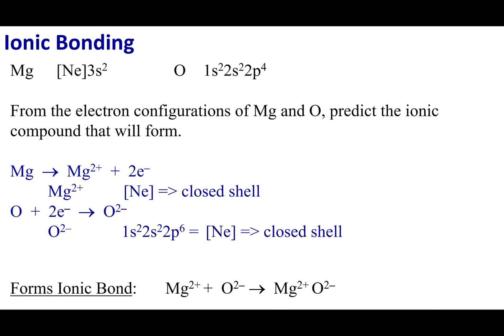Let's take a look at magnesium. If I want to write its electronic configuration, that would be [Ne]3s2. Oxygen, that's going to be 1s2 2s2 2p4.